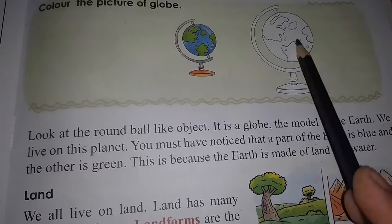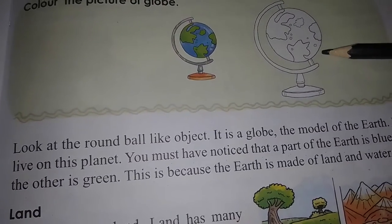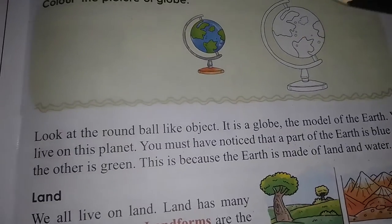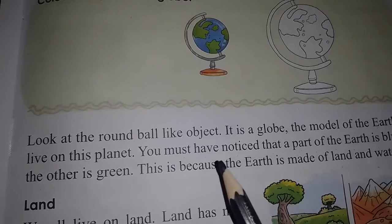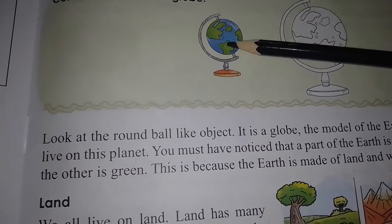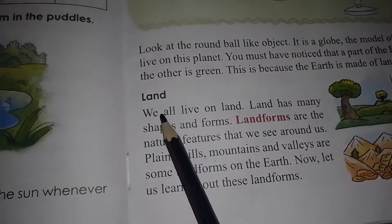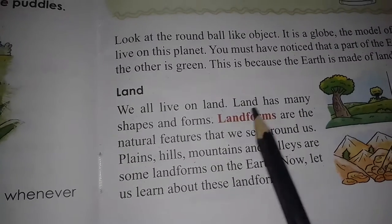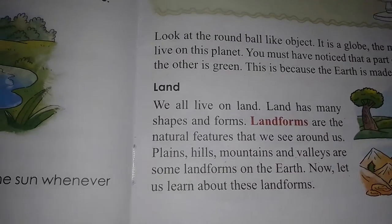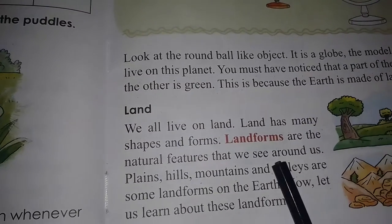It is a globe, which is our dharti — our prithvi. This is the model of the earth. We must have noticed that a part of the earth is blue and the other is green. It is because the earth is made of land and water. Now let's have a detailed explanation. Land has many shapes and forms, called landforms — the natural features that we see around us.